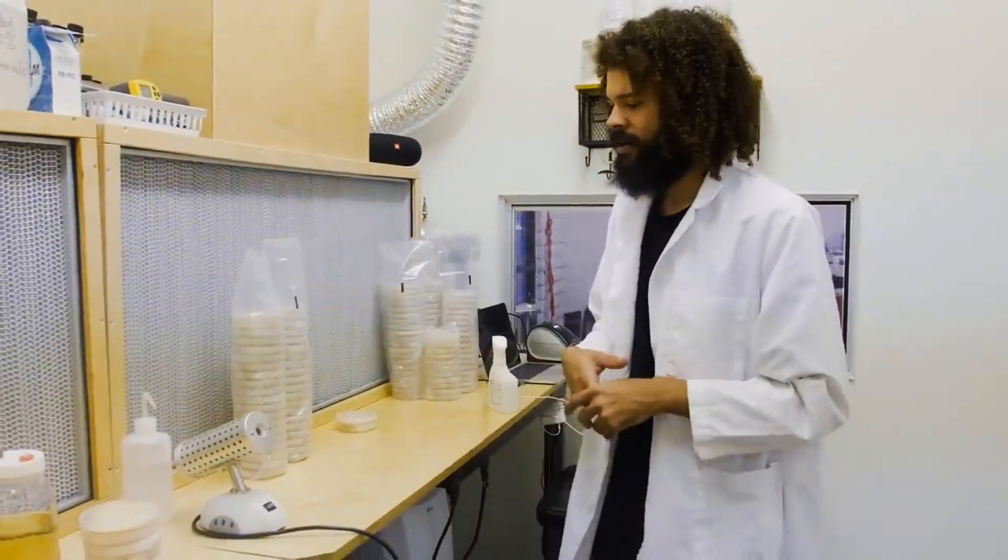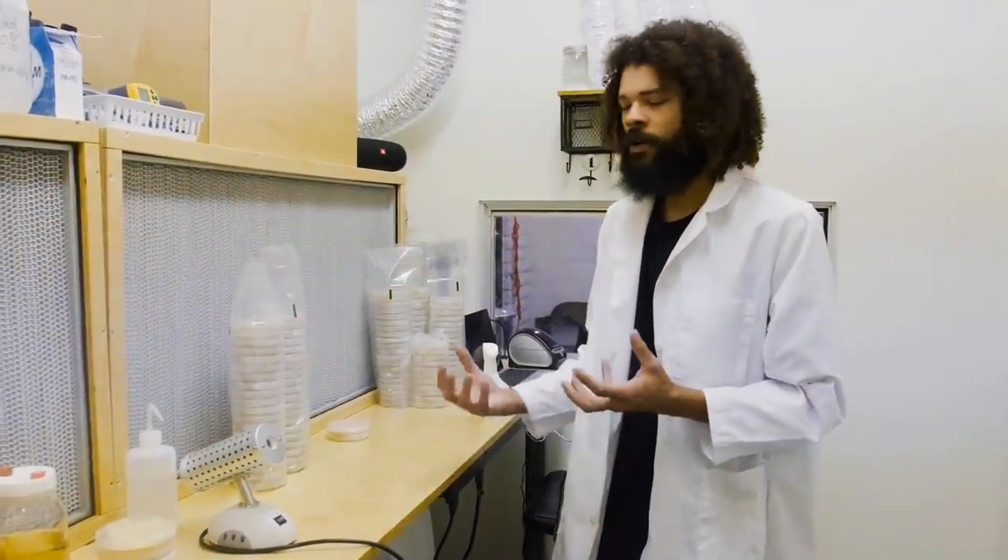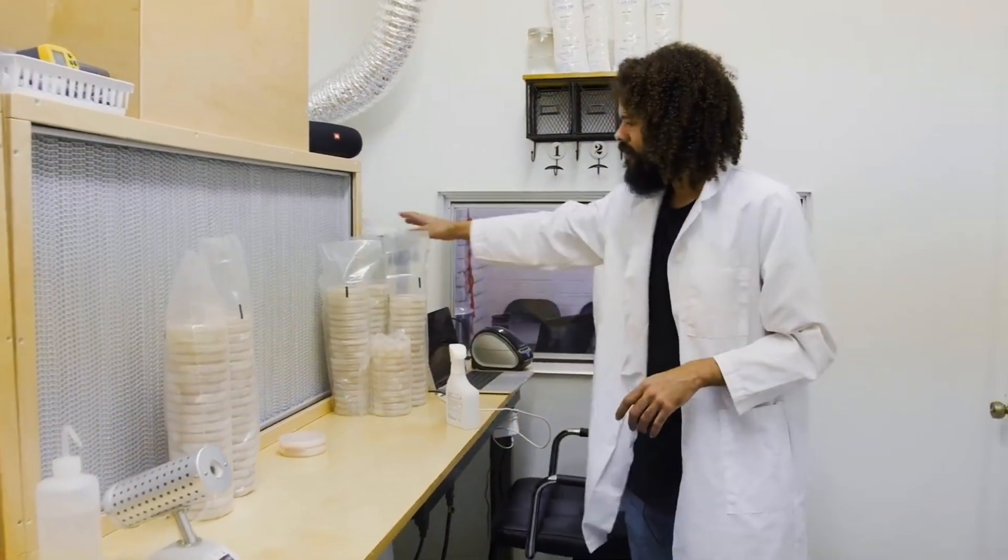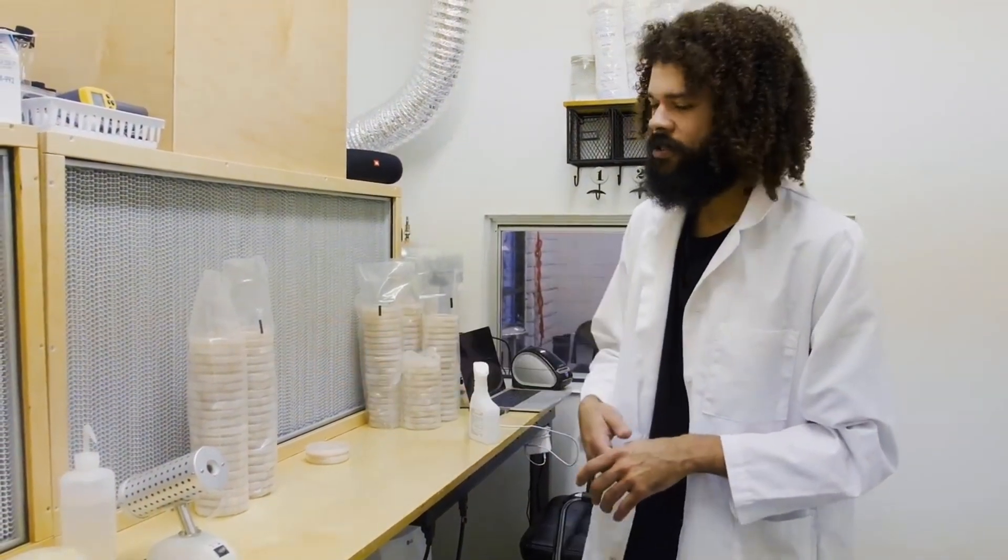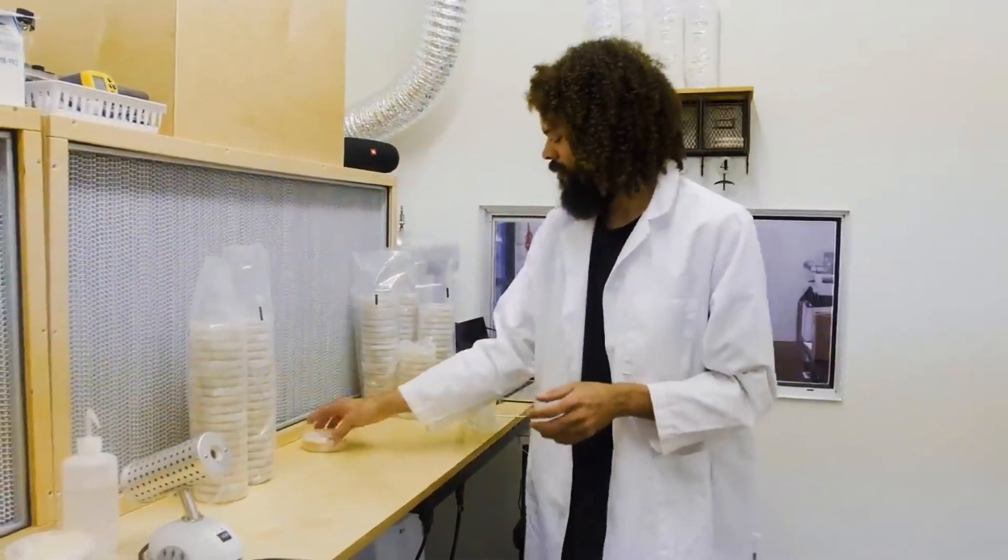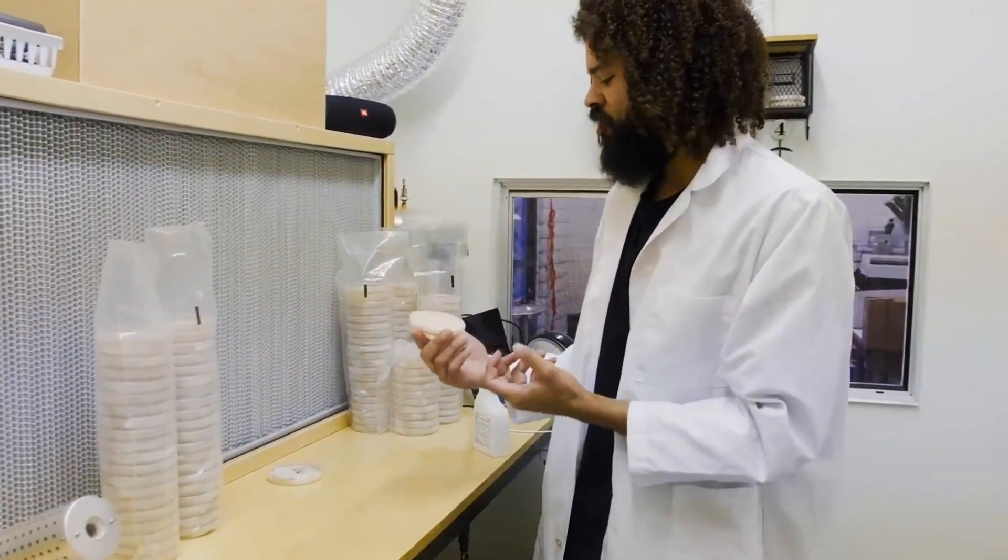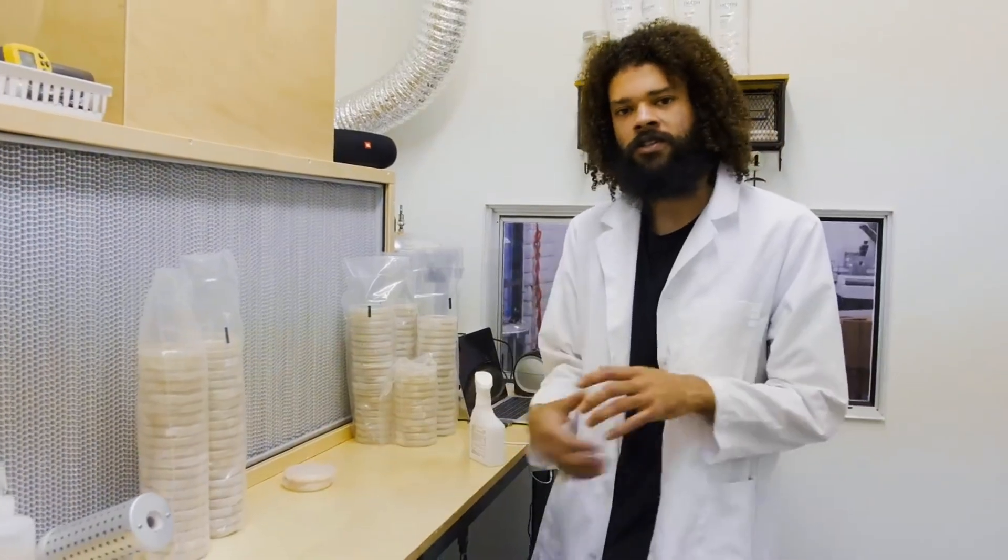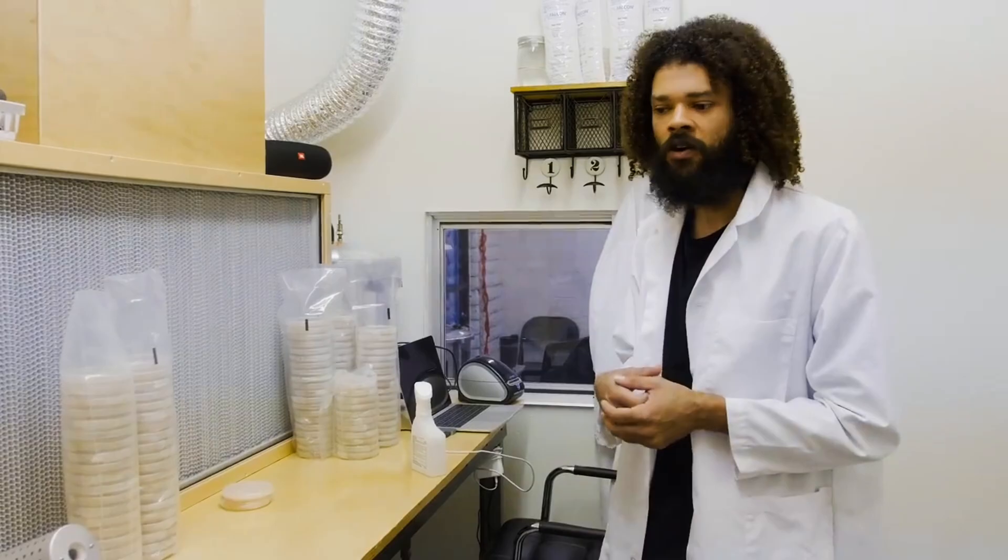This is prepared by mixing malt extract agar powder into one liter of water and then sterilizing in an autoclave. After that it's poured while still hot into these petri dishes and allowed to cool. Once it cools it solidifies and forms this nice two-dimensional surface that our mushroom mycelium can grow across, and we can select the healthiest spots of growth.